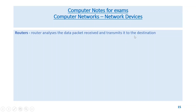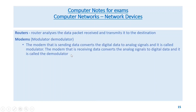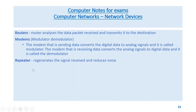Network devices: router analyzes the data packet received and transmits it to the destination. Modem (modulator-demodulator) — the sending modem converts digital data to analog signals (modulator); the receiving modem converts analog signals back to digital data (demodulator). Repeater regenerates the signal received and reduces noise.